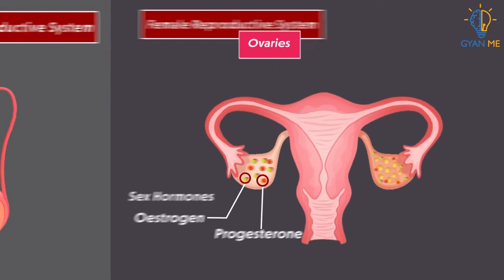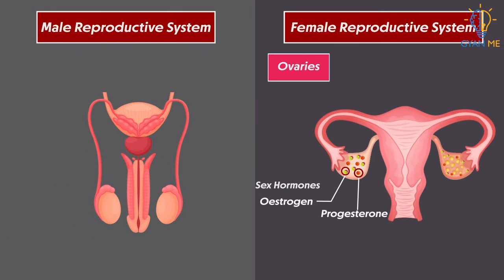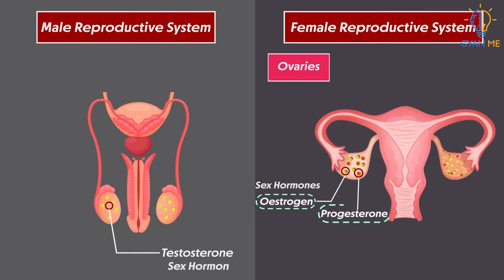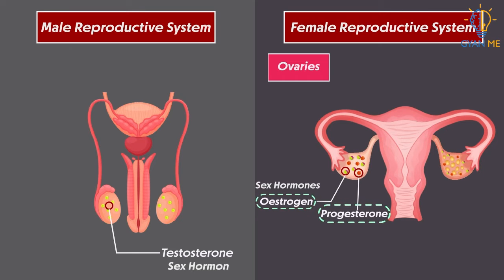Students, can you make a difference? In males, there is only one sex hormone — testosterone — while in females, there are two sex hormones: oestrogen and progesterone. Indeed, the female reproductive system and female reproductive process is a little complicated compared to males.